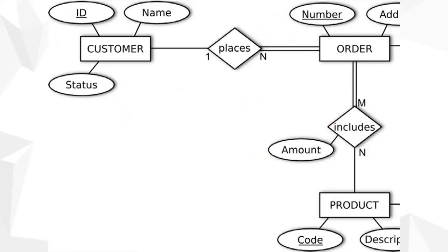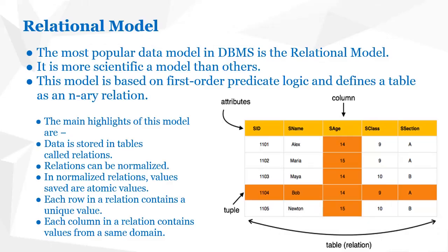Here is a simple example of an ER diagram with three entities: customer, order, and product. The customer has attributes like ID, address, and so on. The relationships are 'places' and 'includes.' One customer can place multiple orders — so the cardinality from customer to order is one to N. Similarly, the 'includes' relationship represents which product is included in which order. So in this ER diagram, we have two relationships — places and includes — and three entities: customer, order, and product.